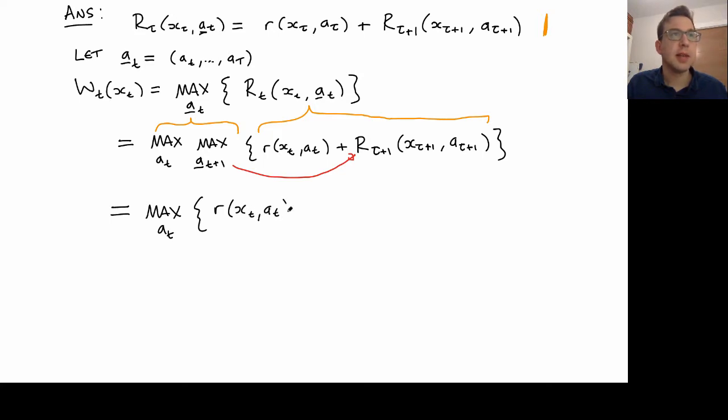So just write down the same expression as before. But now maximization at time t plus one sits next to the reward at time t plus one. So this guy here, right? And now what I can notice is I've got something that's exactly the same as what wt is equal to, but instead of being at time t, it's at time t plus one.